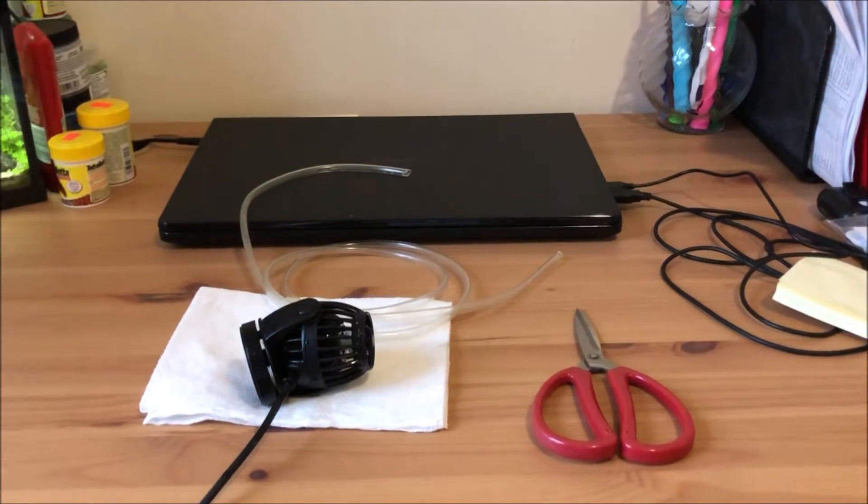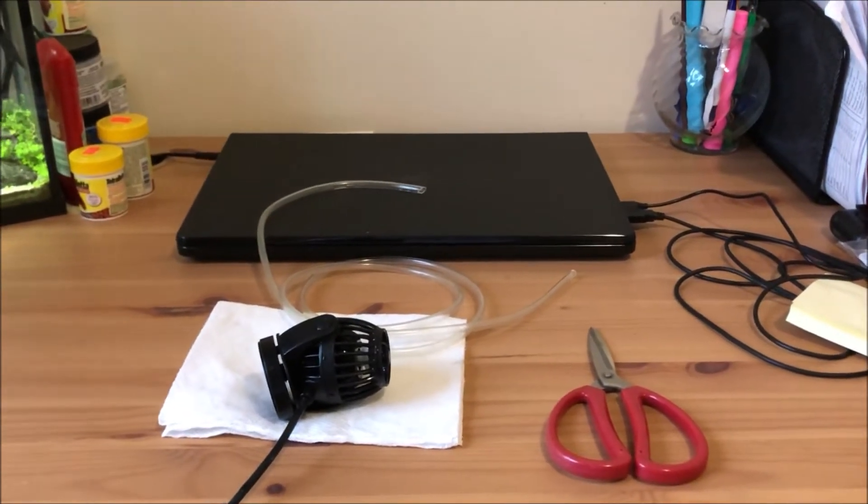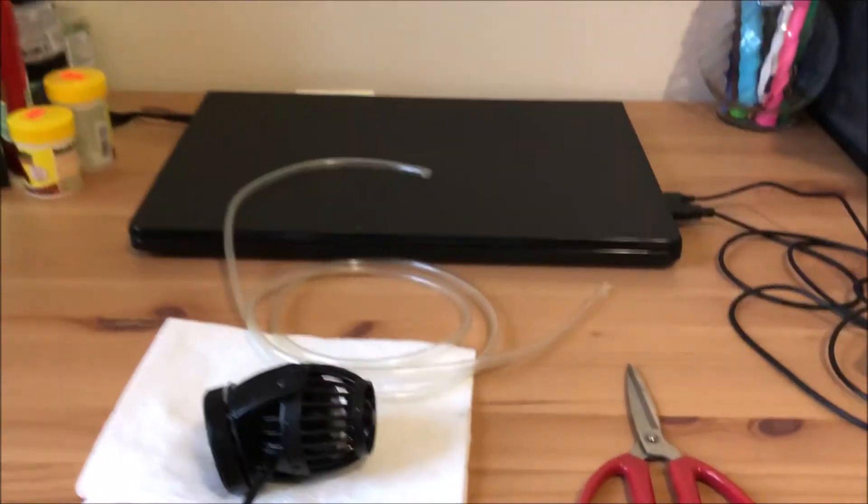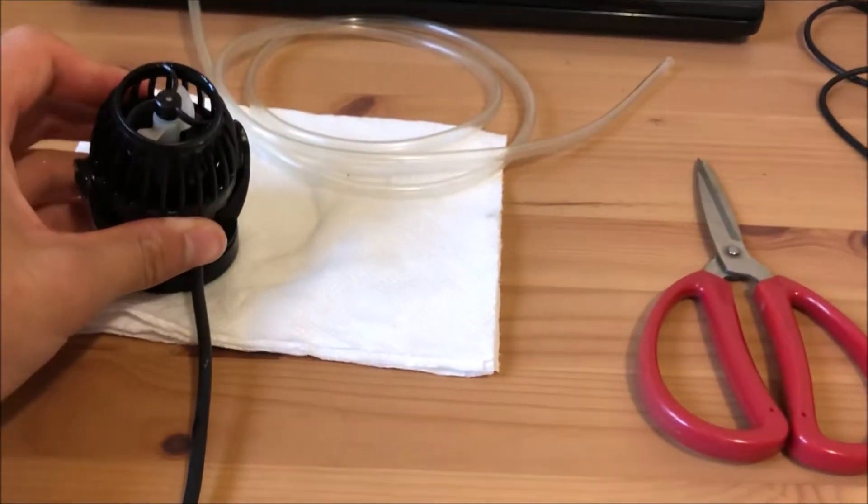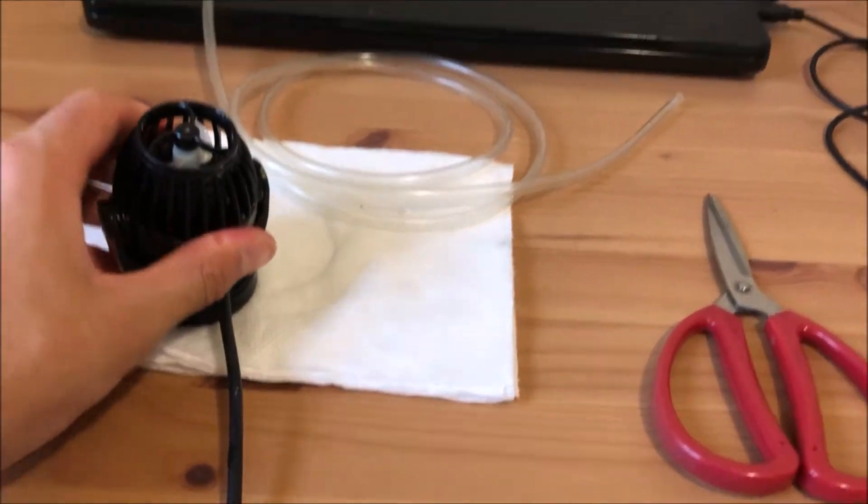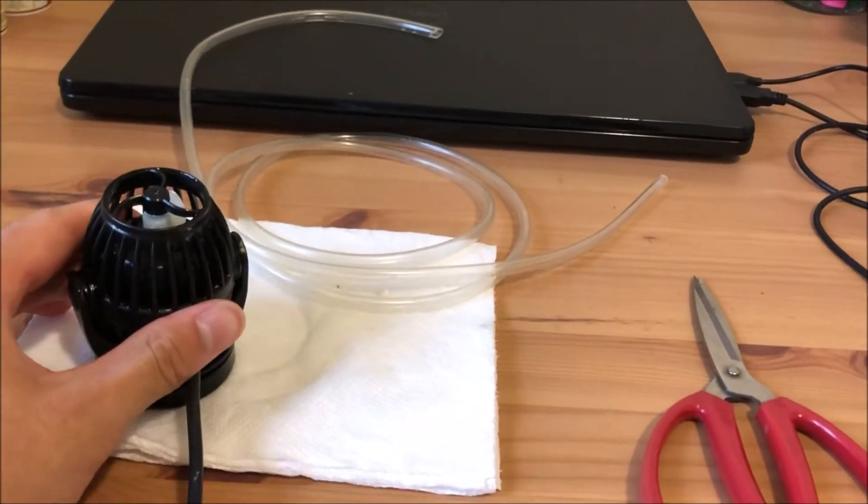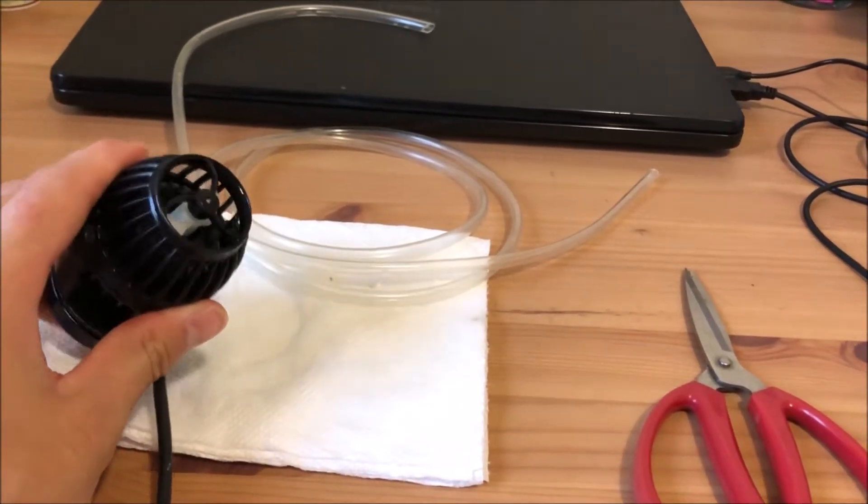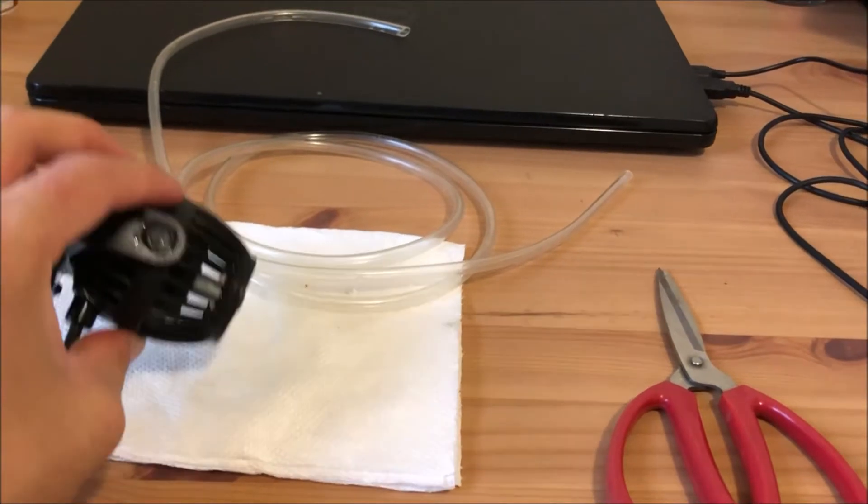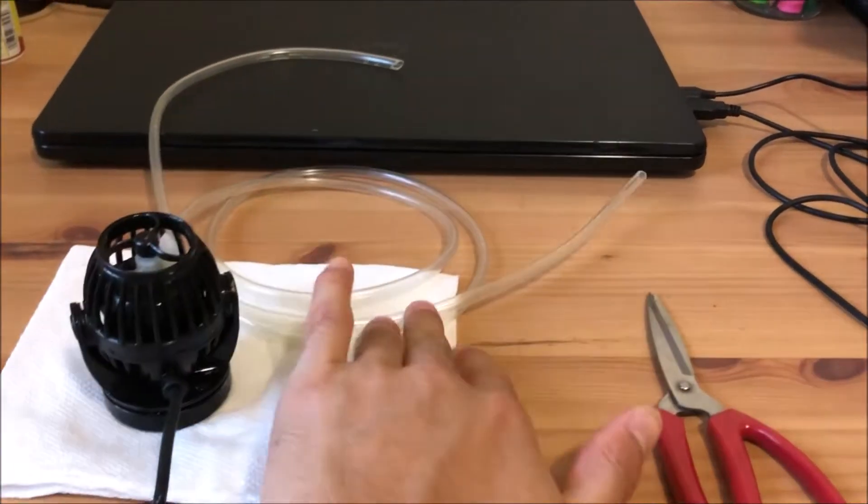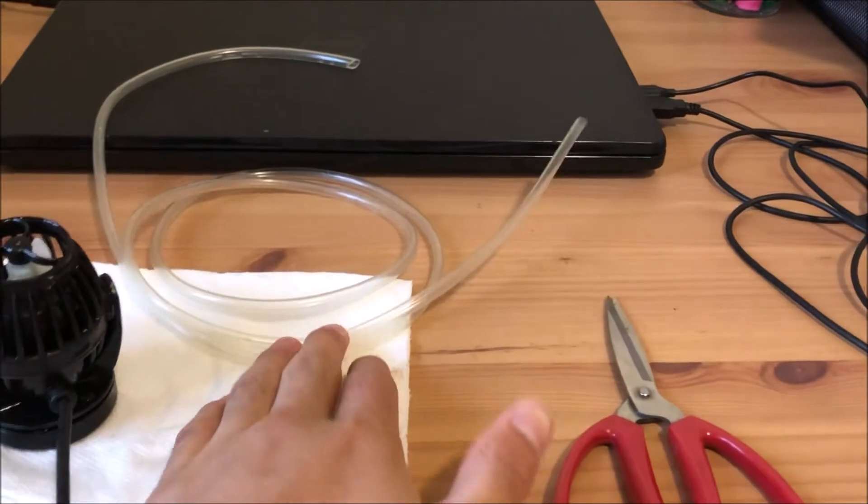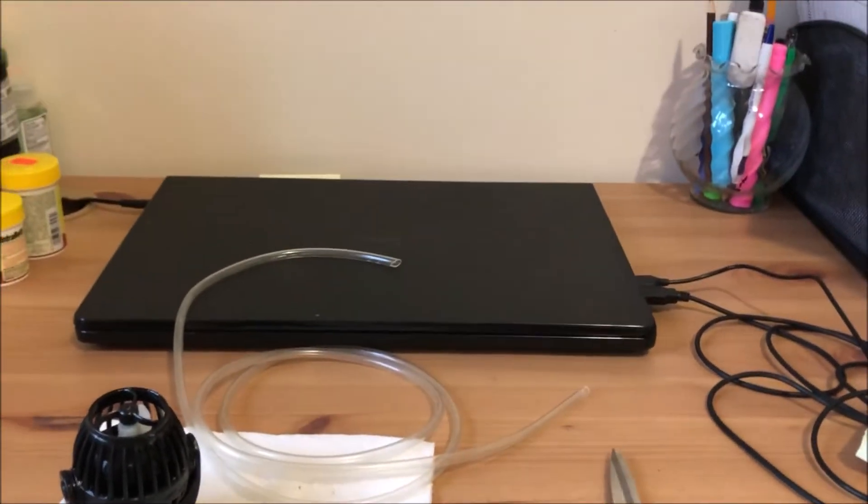Alright guys, so you might have seen this modification a lot online. I'm just going to try it and see if it really works and if it'll fix my Jiabao pump. I did not have this for that long and I don't want it to die just yet. I don't want to get a new one because this stuff is pretty pricey for me. So I'm going to try to fix it. This is all you need: your actual pump, your airline hose, and scissors.